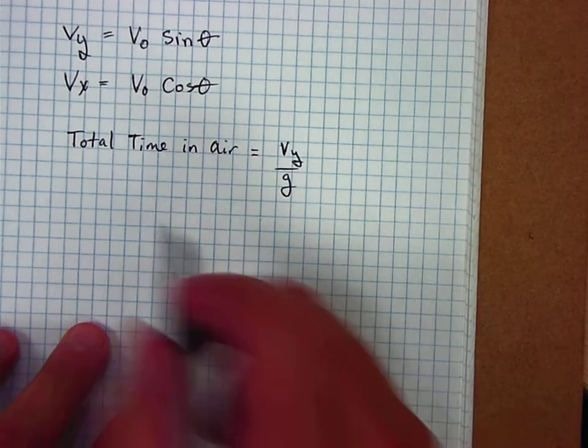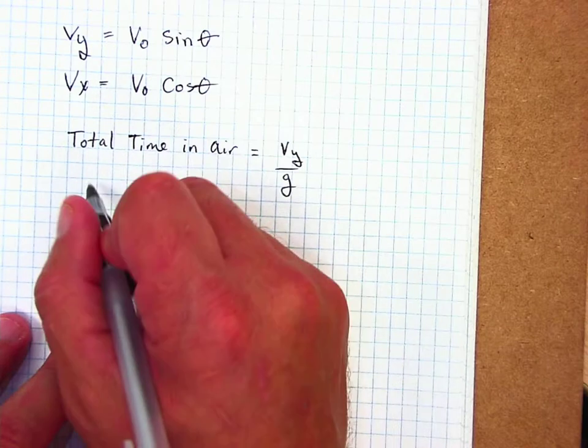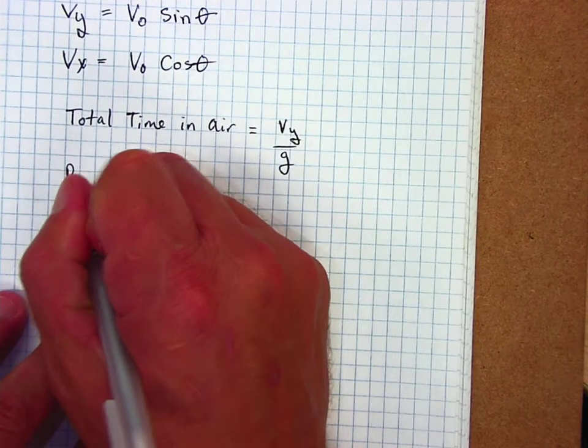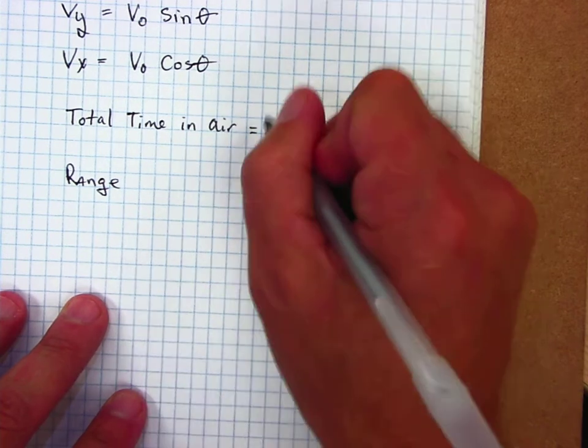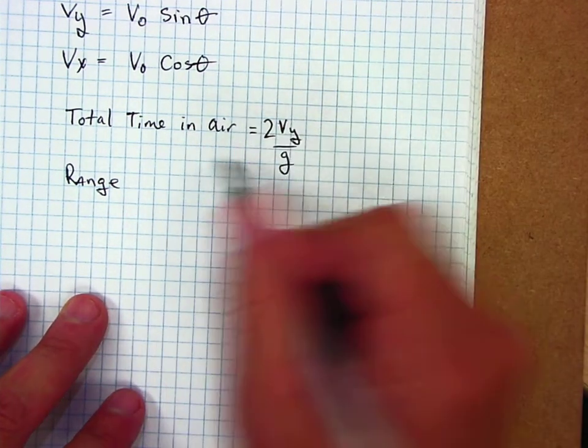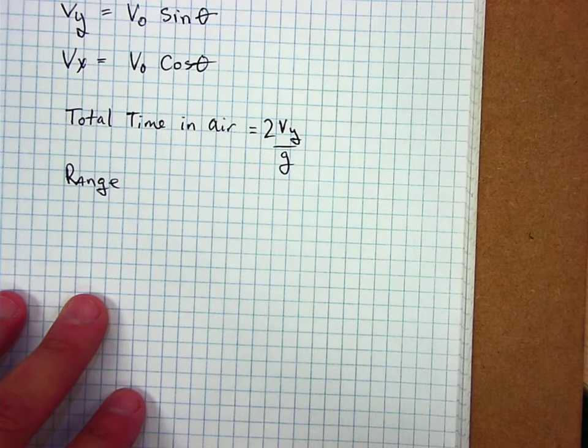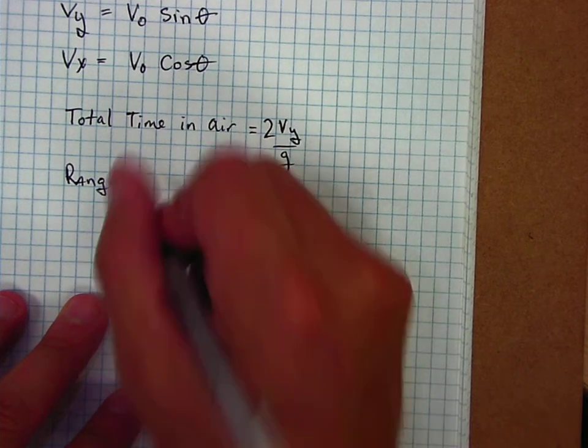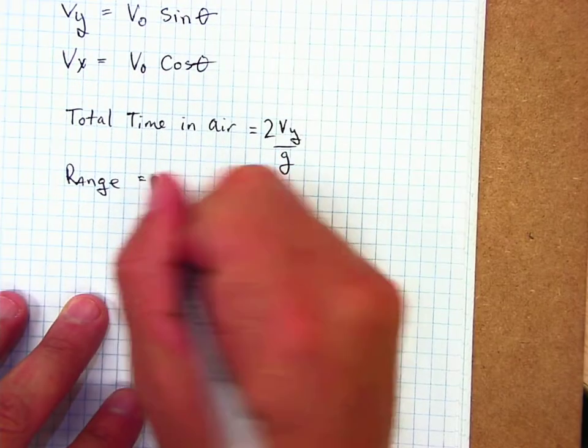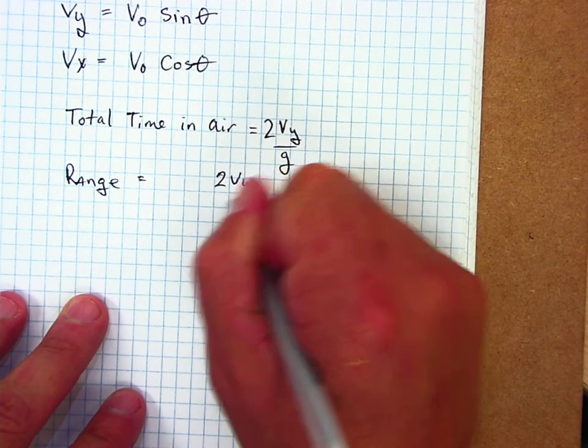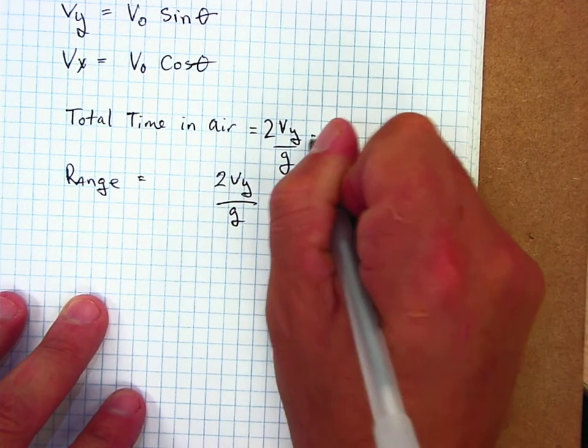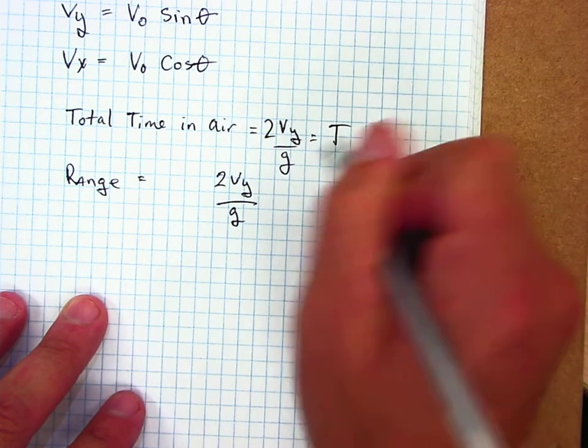To find the range, this will be times 2 because we have to work in the up and down portion. The range will now be 2 times v_y divided by gravity, or whatever this answer is, either way.